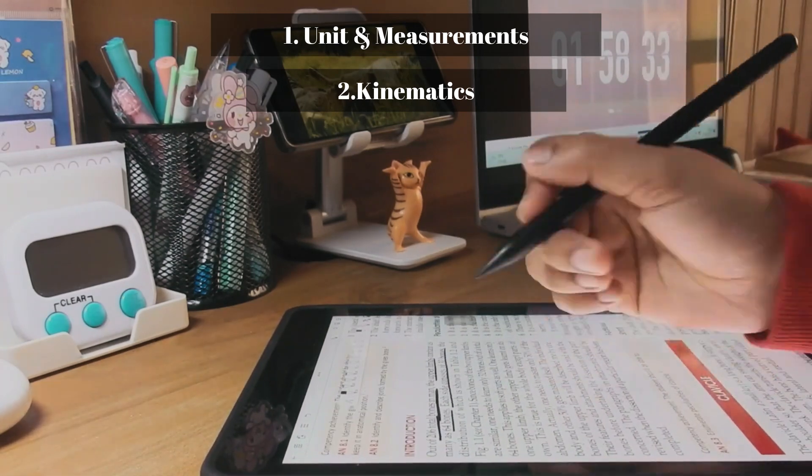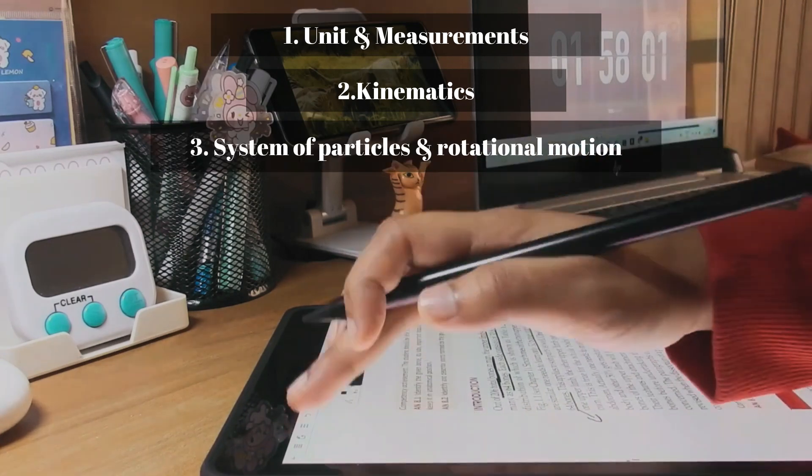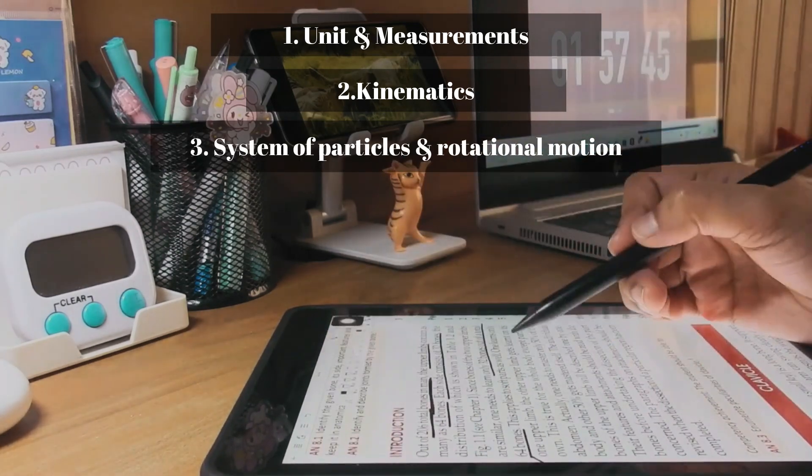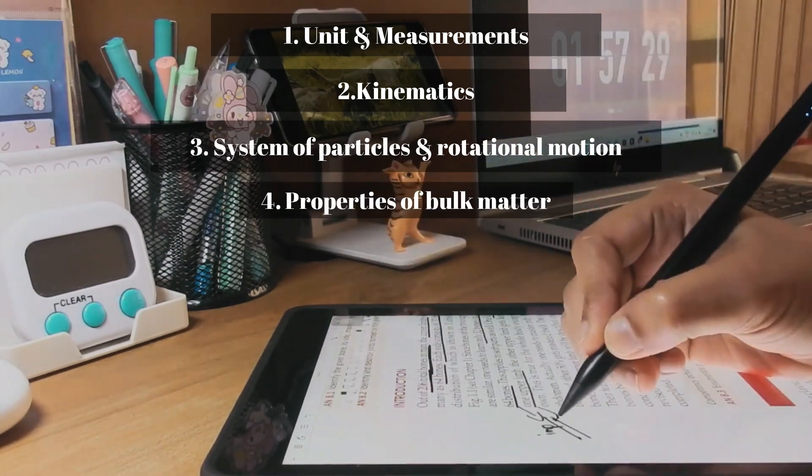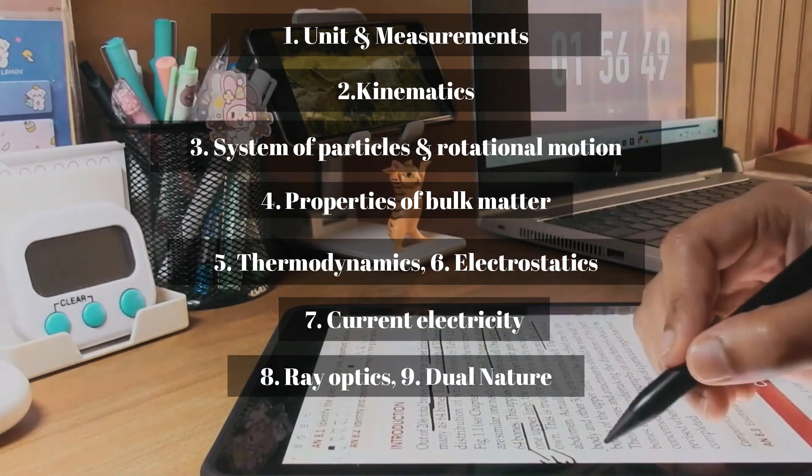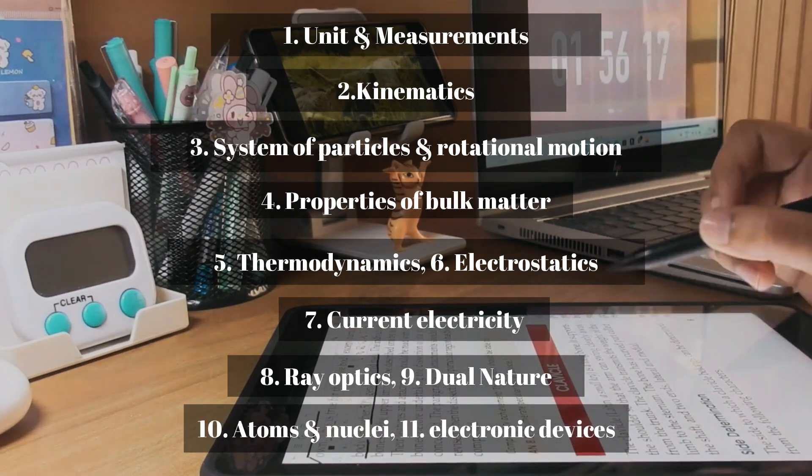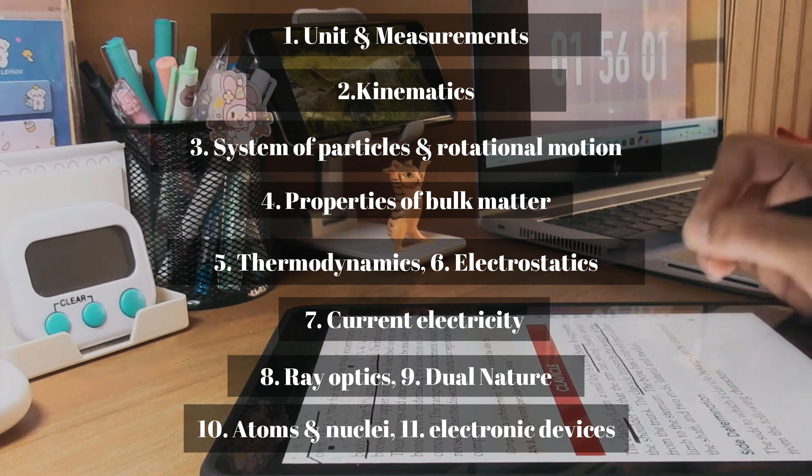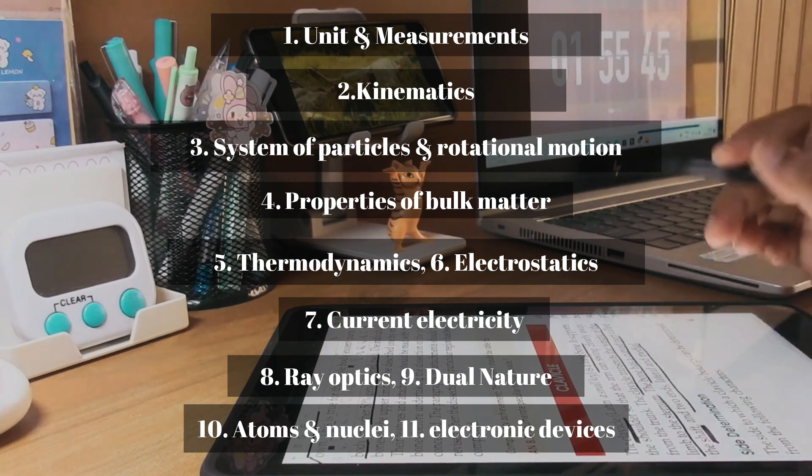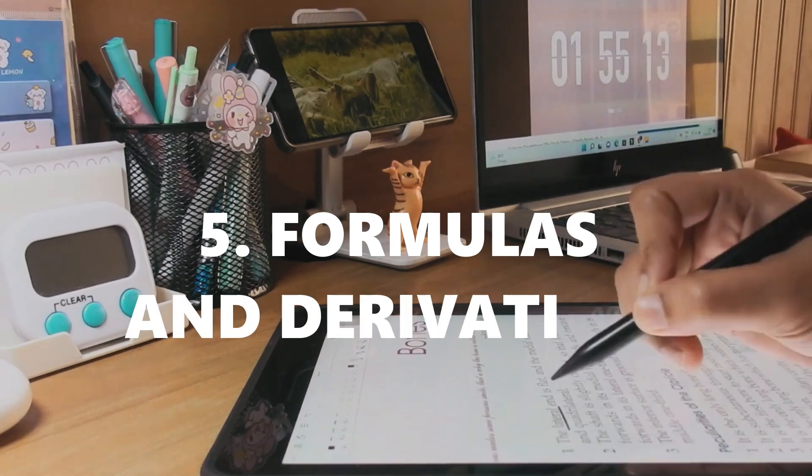Next chapter is System of Particles and Rotational Motion, Properties of Bulk Matter, Thermodynamics, Electrostatics, Current Electricity, Ray Optics, Dual Nature, Atoms and Nuclei, and lastly Electronic Devices. Try to focus more on these chapters because these are important and scoring ones. Lastly, focus on formula learning and derivations.